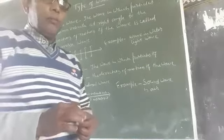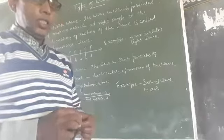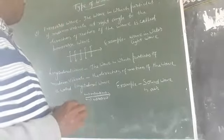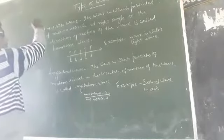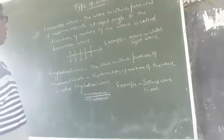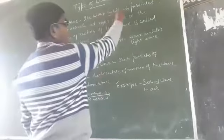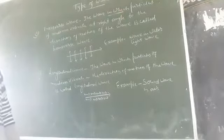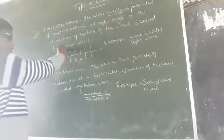As I explained in my previous class, there are two types of waves. The first wave is the transverse wave. The wave in which particles of the medium vibrate at right angles to the direction of motion of the wave is called a transverse wave.